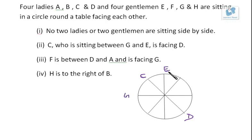Now F is between D and A and is facing G. So if G is here, F will be here, so F is facing G. F is between D and A, so F is between D - that means A should be here.